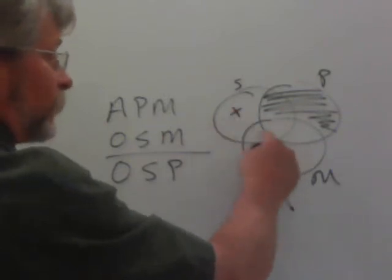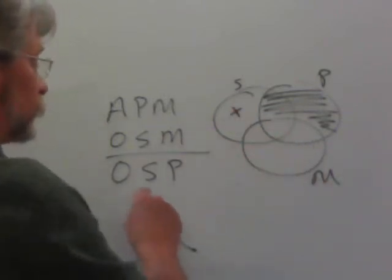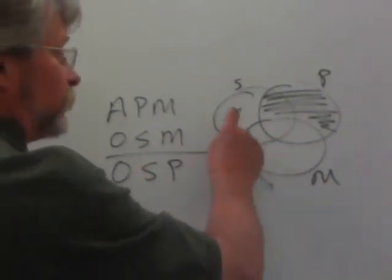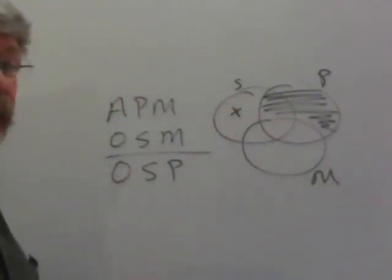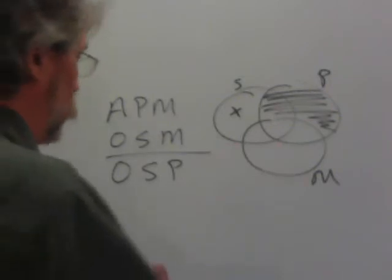Does that show that some S is not P? Yes, it does because that X is inside of S and it's outside of P. So that's a valid argument. The AOO2.